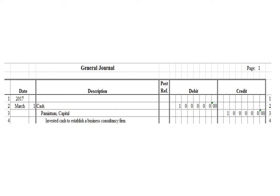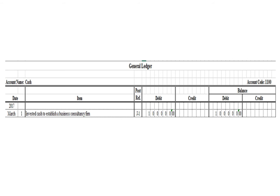Our first journal entry is a debit to cash for $100,000 and a credit to capital for $100,000. Let us post each entry to the respective ledger. We are going to start with cash. Cash was debited, so let us post this cash transaction to the cash ledger. This is the cash ledger.